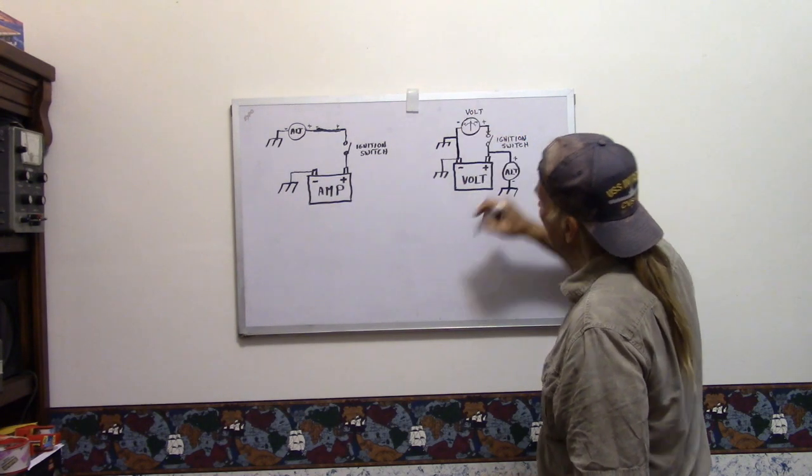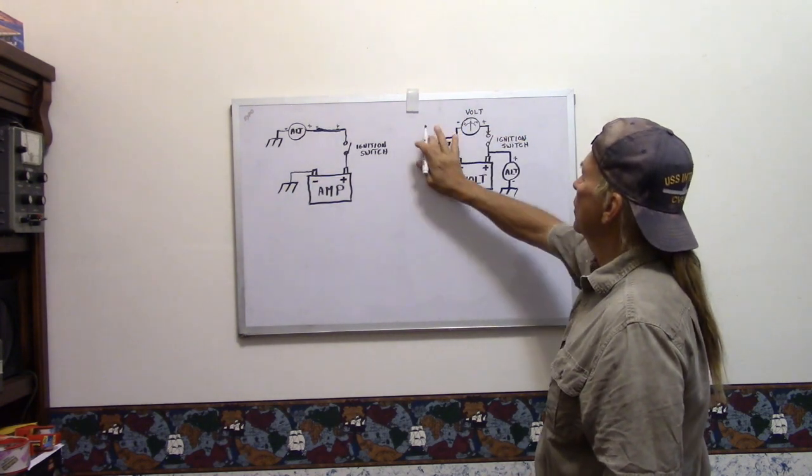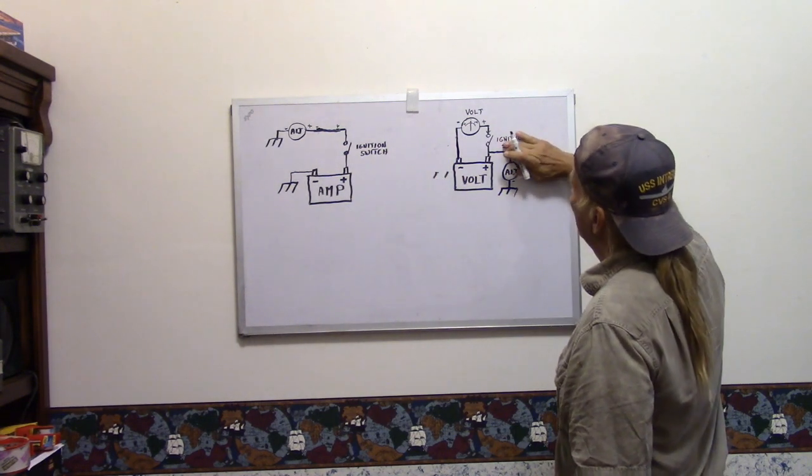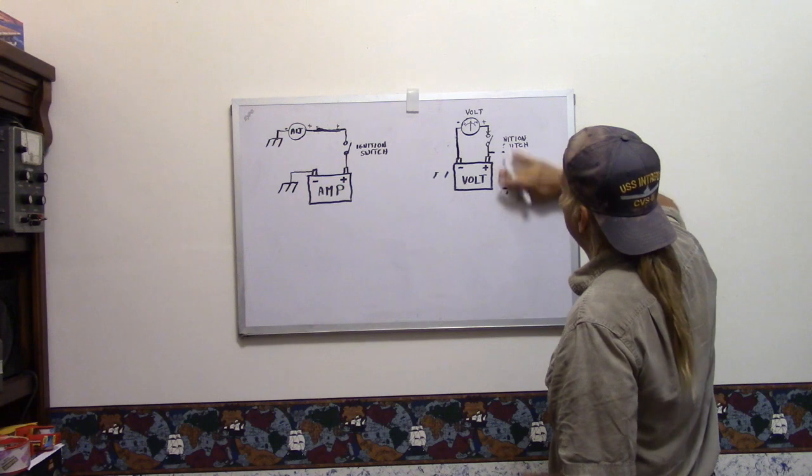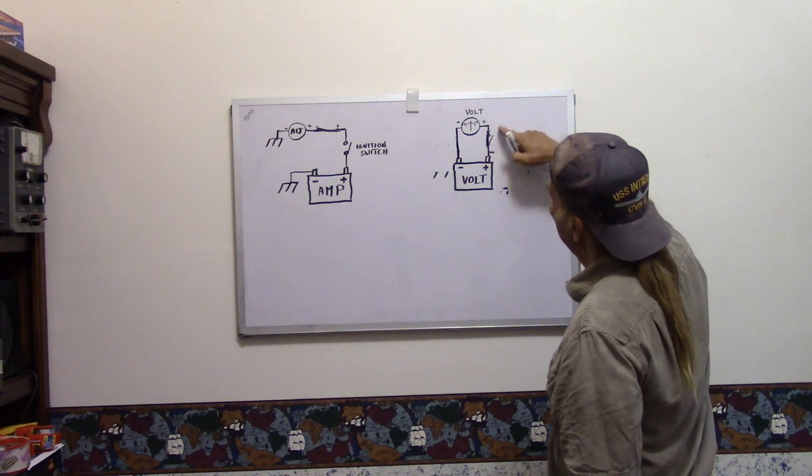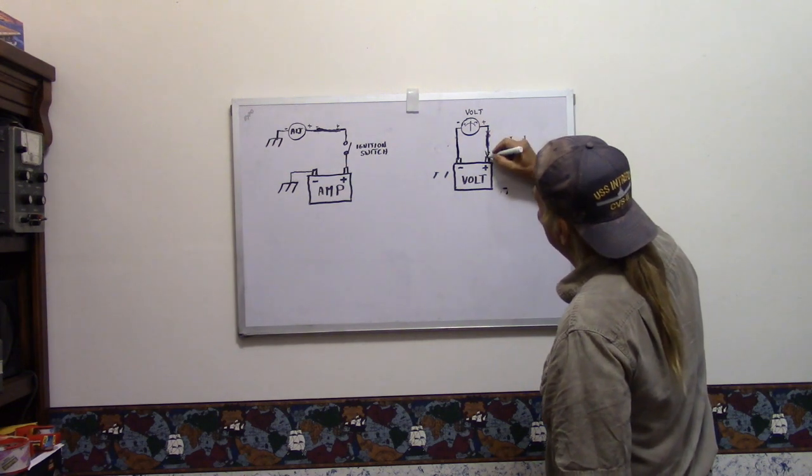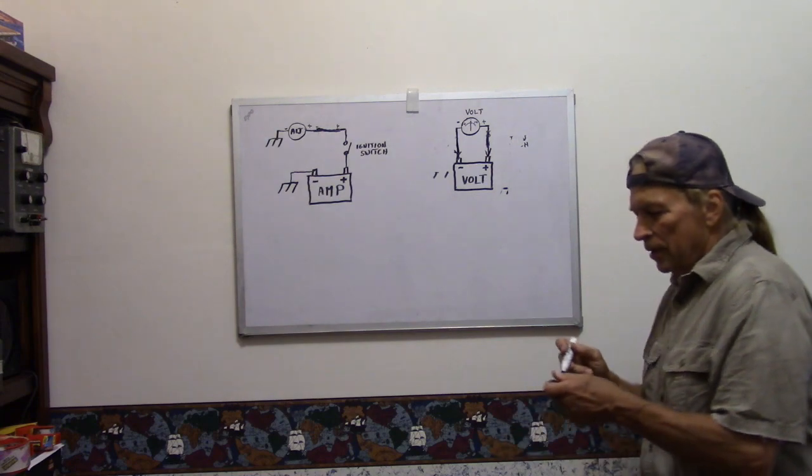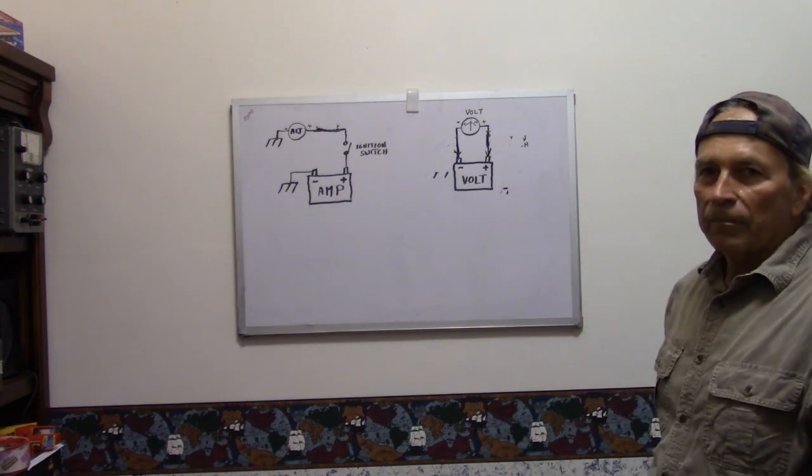So if we simplify the drawing and take the alternator out of the circuit, when the switch is closed the voltmeter is reading directly across the battery.